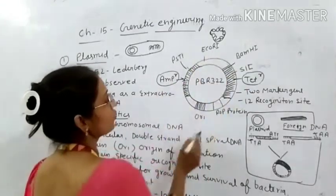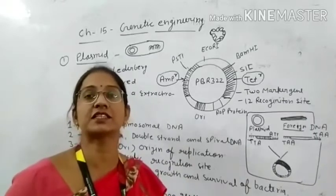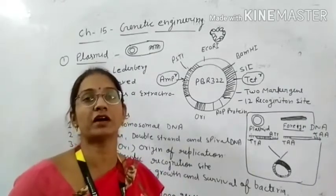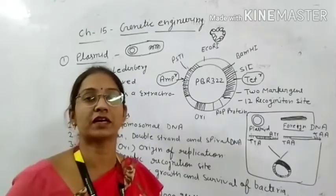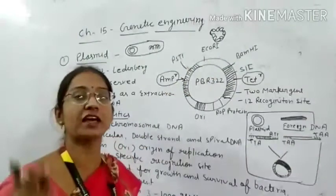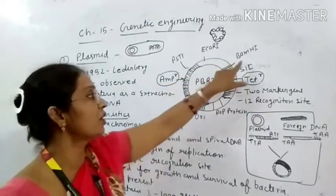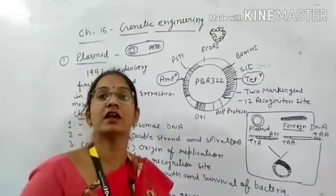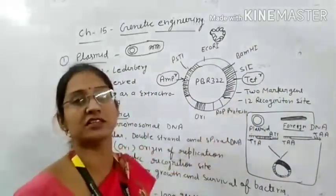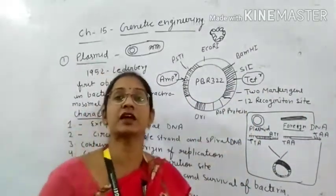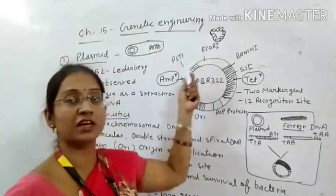In this plasmid you can see recognition sites such as PstI, PvuI, BamHI, and HindIII. These are called restriction sites or recognition sites — the sites where our restriction enzyme cuts. The first restriction enzyme is EcoRI. In pBR322, there are 12 recognition sites present in total. We can use any one of them, but at a time we use only one. If we use more than one restriction enzyme, the plasmid will be fragmented.